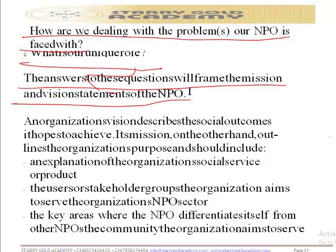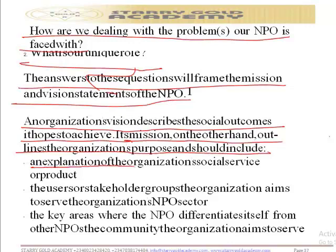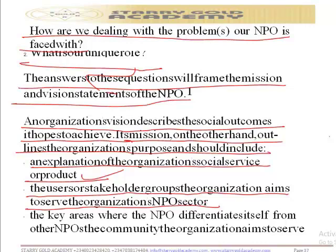An organization's vision describes the social outcome that the organization wants to achieve — the major reason why the organization exists. The mission, on the other hand, outlines the organization's purpose and should include: an explanation of the organization's social service or products, and the users or stakeholder groups that the organization aims to serve within its NPO sector.